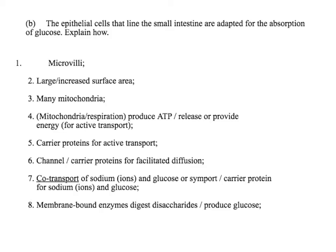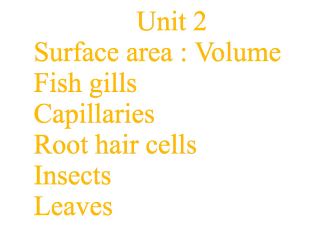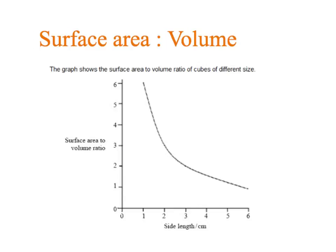Exchange and transport is a huge part of Unit 2 and there are many things you would be expected to use the Fick's Law equation for. First, the idea about surface area to volume ratio: as things get bigger, the surface area to volume ratio decreases. Things that are very small, because they've got a high surface area to volume ratio, can often get enough oxygen into their bodies by simple diffusion. Things that are much bigger have to have specialised exchange surfaces like lungs and gills, or they have to have a transport system like a blood system, or both.